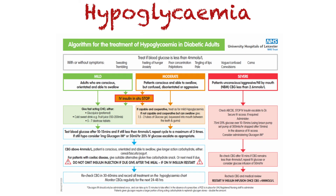Hypoglycemia management depends on the clinical presentation. If the patient can swallow then they can be given a fast-acting carbohydrate like five glucose tablets or a glass of fruit juice, as well as a long-acting carbohydrate like toast or biscuits. If the patient is conscious but cannot swallow then glucose gel can be squirted onto the gums. If the patient is unconscious then 150 ml of 10% glucose IV should be given STAT. If there is no IV access then IM glucagon 1 mg can be given instead. After administering treatment, BMs should be done 10 minutes after and a long-acting carbohydrate must be given if possible to prevent refractory hypoglycemia.